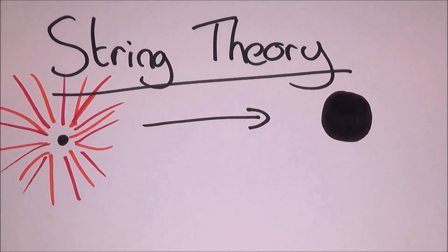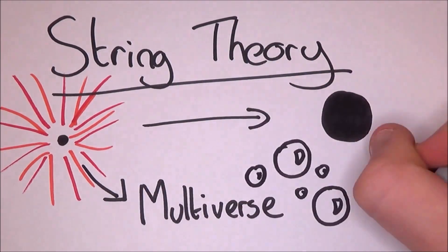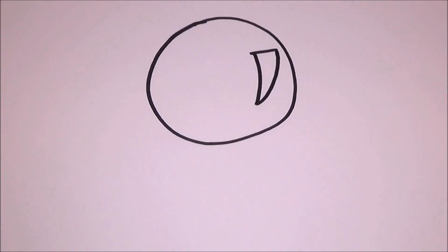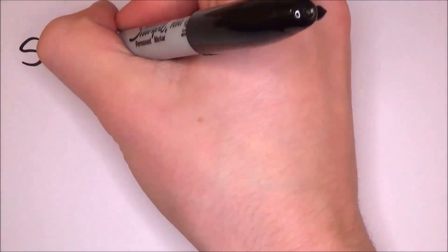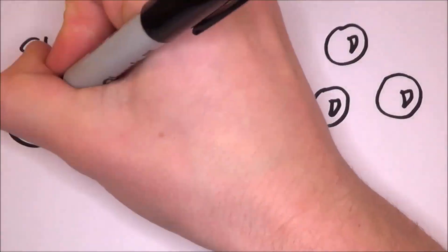String theory takes you before the Big Bang to multiverses. A good image is the idea of a bubble and we're stuck onto the bubble. We can't even leave the bubble. What string theory says is that there are many bubbles.